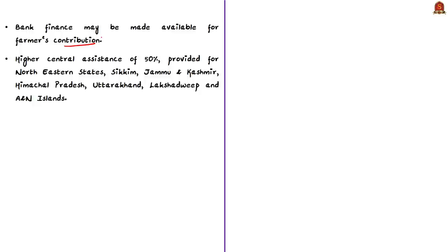Higher central assistance of 50% will be provided for northeastern states, Sikkim, Jammu & Kashmir, Himachal Pradesh, Uttarakhand, Lakshadweep, and Andaman & Nicobar Islands. If state governments provide a subsidy of more than 30%, the beneficiary share will reduce accordingly. This is all about the PM Kusum scheme.